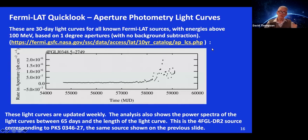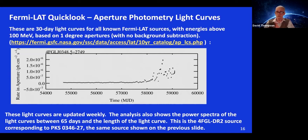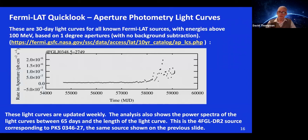Another way is using aperture photometry light curves. We have only 180 monitored source light curves, but these 30-day light curves are done for all known Fermi-LAT sources, energy above 100 MeV, based on one-degree apertures — no background subtraction. You can see the pattern over the entire course of the Fermi mission. For the same AGN, you can see it was basically at zero for years and years and then suddenly became active. These light curves are updated weekly, and they also produce a power spectrum.